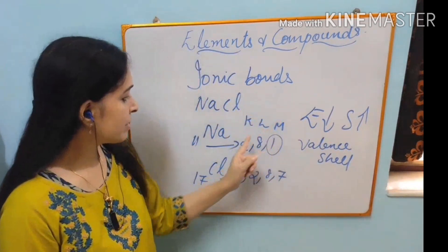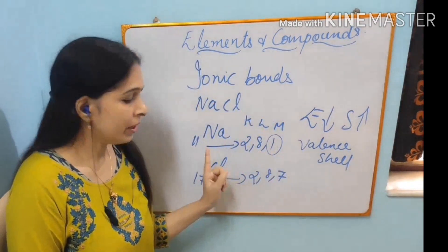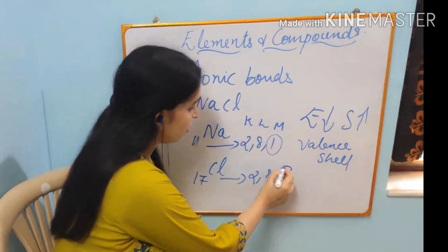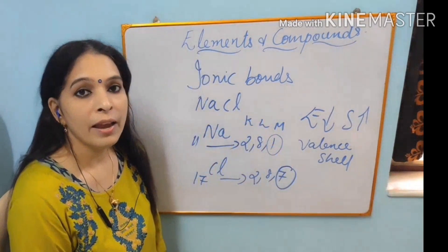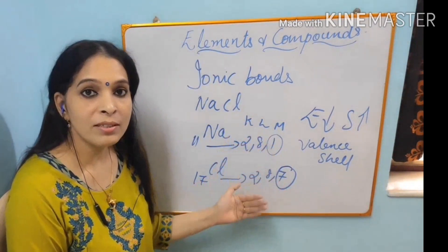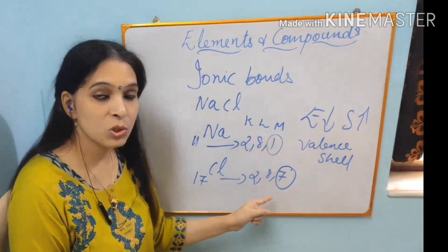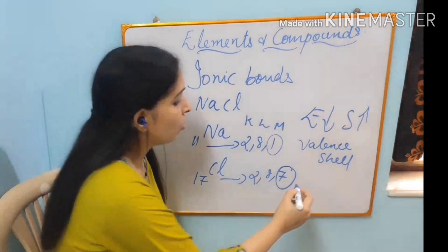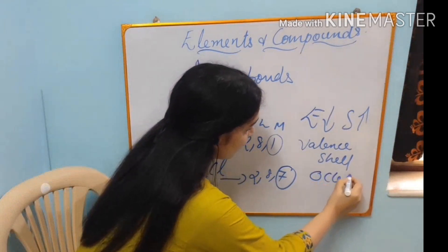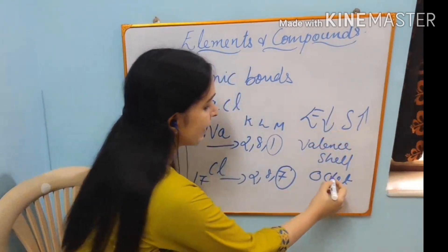So N is the outermost shell of sodium and N is the outermost shell of chlorine too. And both these elements need 8 electrons in their valence shell. This is known as octet formation. Octa means 8.